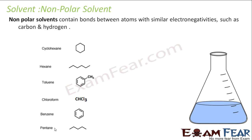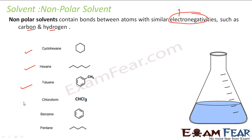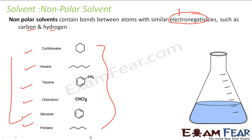And then we have nonpolar solvents. Nonpolar solvents are generally with atoms of similar electronegativity. For example, carbon and hydrogen have almost similar electronegativity. So if we form a compound which has bonds between carbon and hydrogen, they are generally nonpolar, because the electronegativity difference between carbon and hydrogen is pretty small. For example: cyclohexane, hexane, toluene, chloroform, benzene, pentane — these are my nonpolar solvents, because these are formed by carbon–hydrogen bonds. It is all about electronegativity. If you have a solvent made of atoms where the difference in electronegativity is very high, it will be polar. If the difference in electronegativity is less, it will be nonpolar.